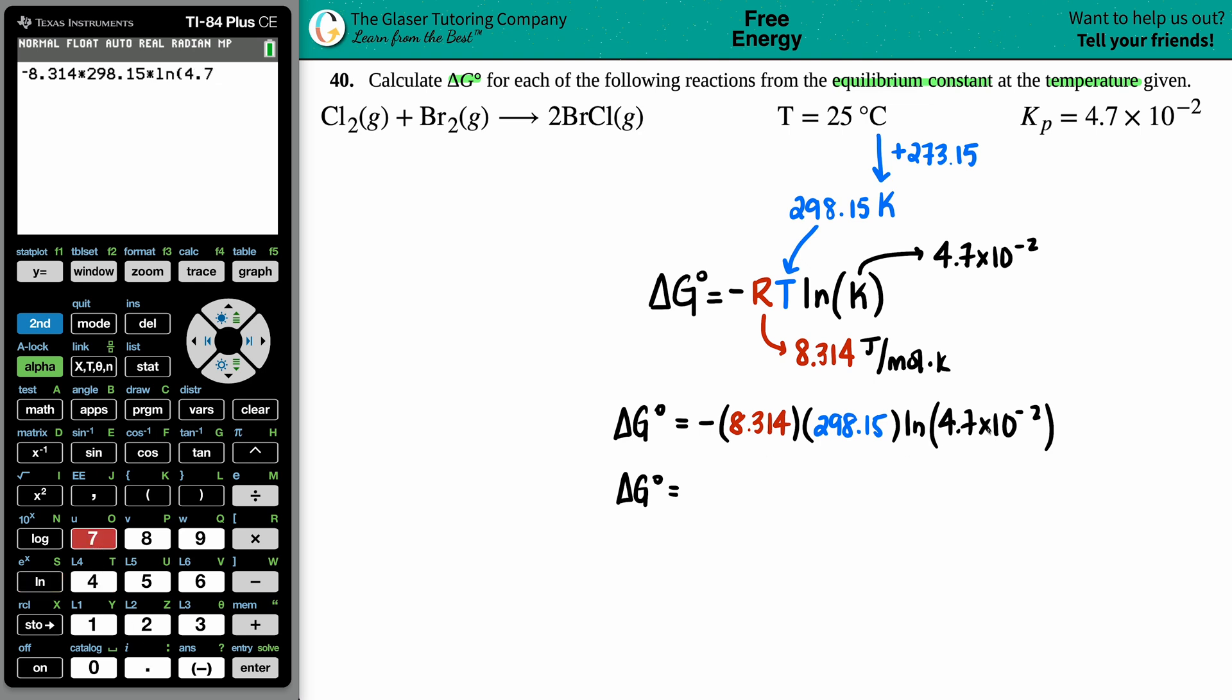Now this is in scientific notation. What I like to use is the EE button. I don't like to put in times 10 to the, because sometimes the calculator won't really understand what you're doing if you're not using parentheses. So I like to use the EE button - that's the second comma button, and this means times 10 to the. So it's 4.7 times 10 to the - now all I got to do is just put negative 2, and then enter. Boom, there it goes: 7,579.